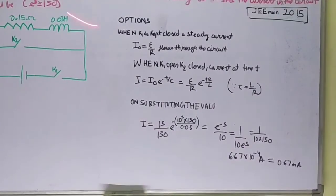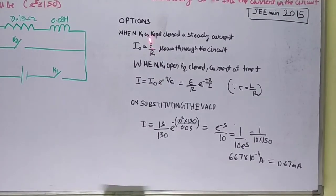So here is the solution. When K1 is kept closed, a steady current I0 equals EMF by R flows through the circuit. Remember this.